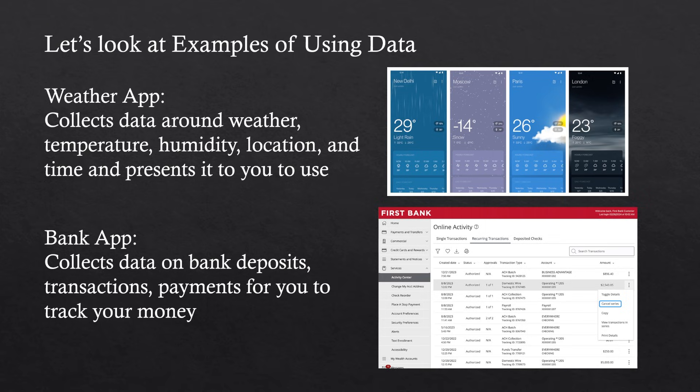Let's look at some examples of how data is used in the real world, something that a lot of you will use almost every single day. This first one is a weather app. I use my weather app almost all the time — I've got to send my kids to school and I want to check if it's rainy, hot, or cold, if they need a jacket. That requires a lot of data. Meteorologists use tools to collect data on all of these things, then they're presented in these apps. They collect data about weather, temperature, humidity, location, and time, and they aggregate all of it — meaning they bring it together into one place — and finally they present it to you based on your location.